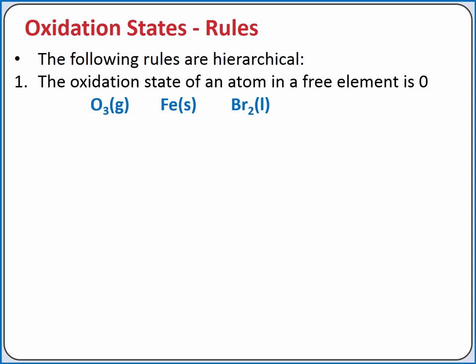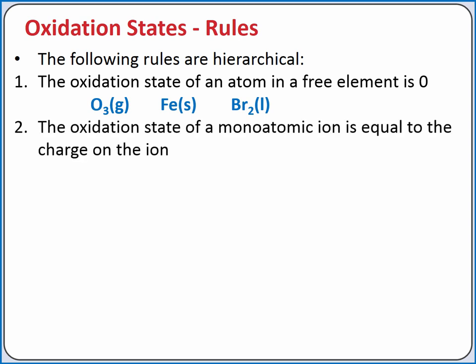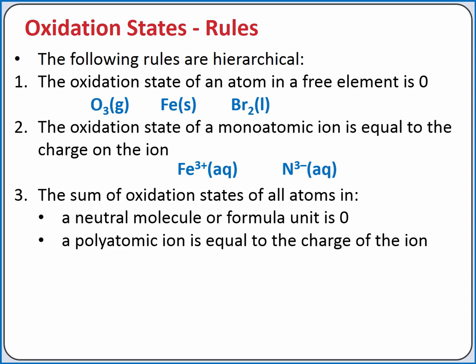Our second most important rule is that the oxidation state of a monatomic ion is equal to the charge on the ion. For example, iron 3+ has an oxidation state of +3. Nitride, which is N3−, has an oxidation state of −3. Our third most important rule is that the sum of the oxidation states of all atoms in a neutral molecule or formula unit is zero, or for a polyatomic ion is equal to the charge of the ion. We'll use this rule extensively in our examples.